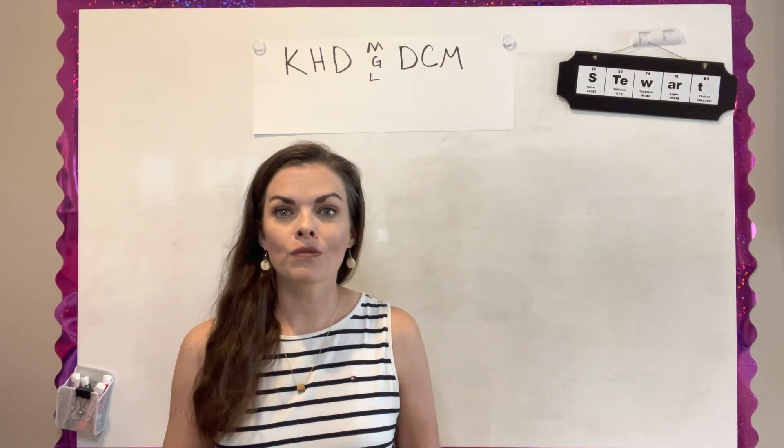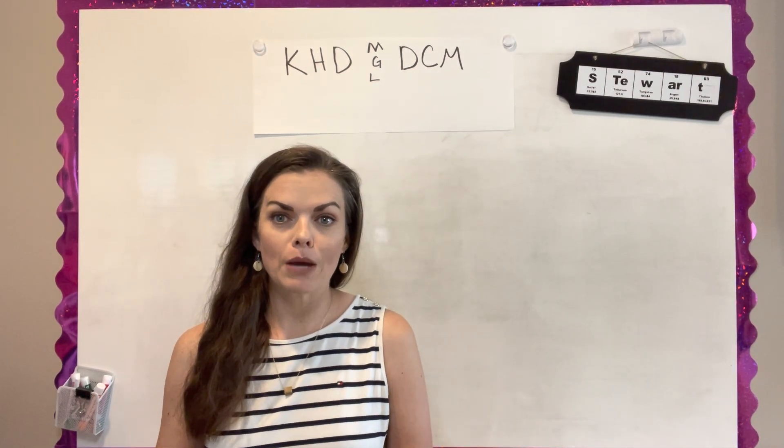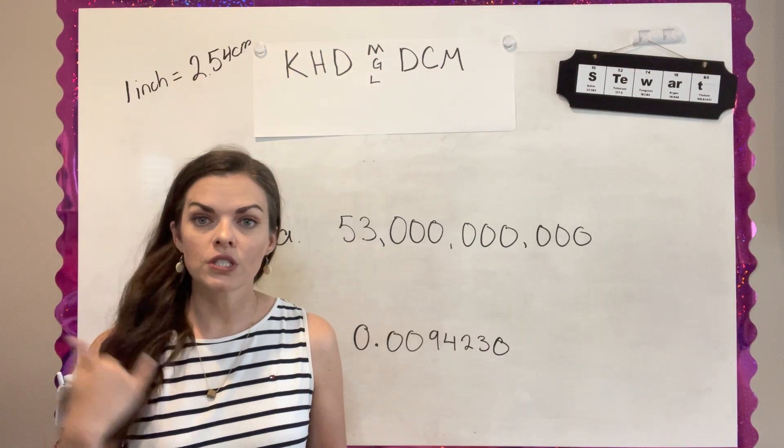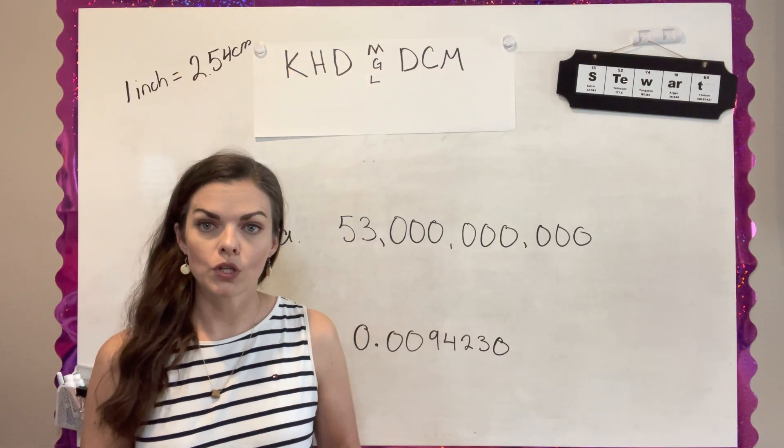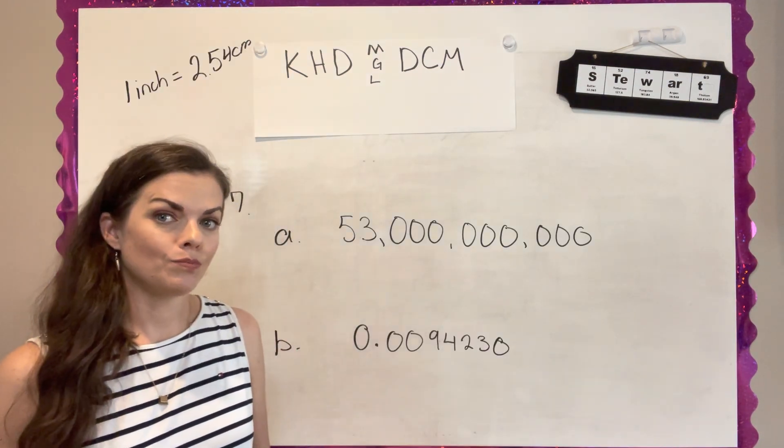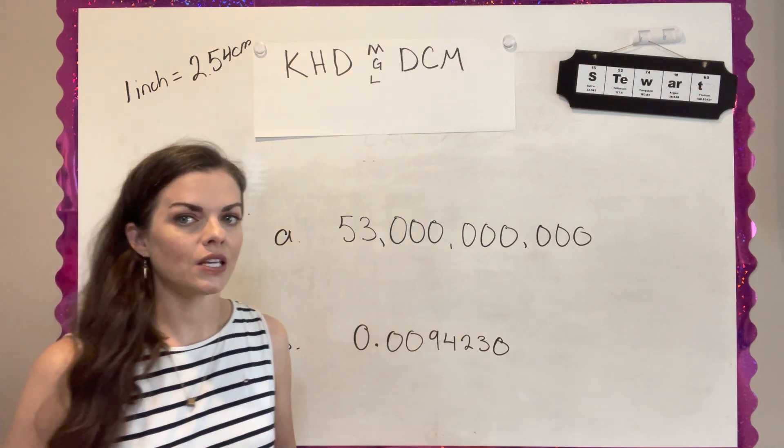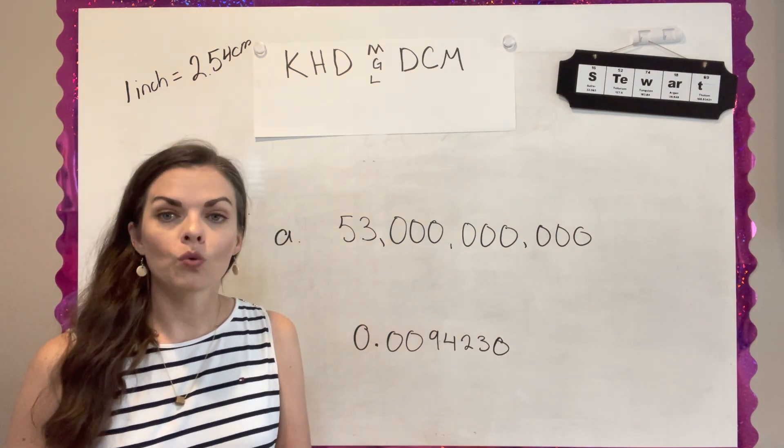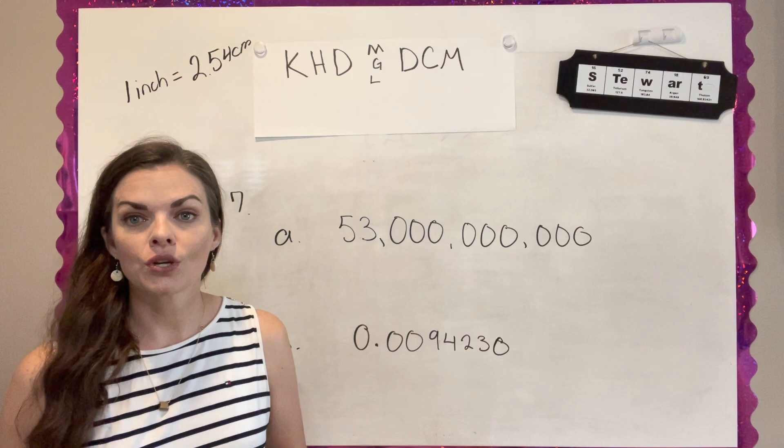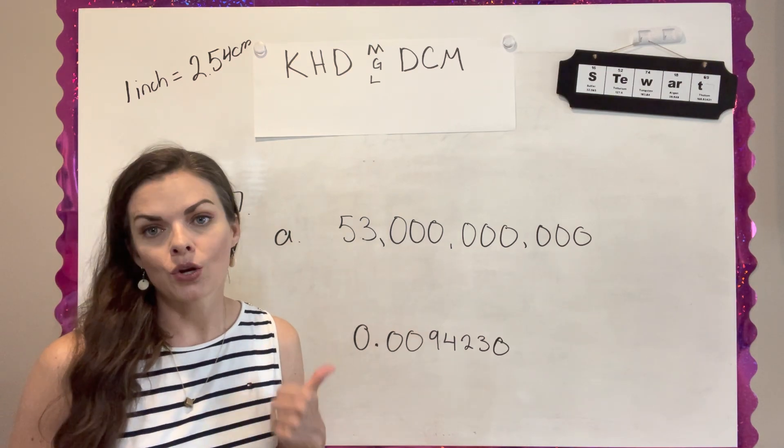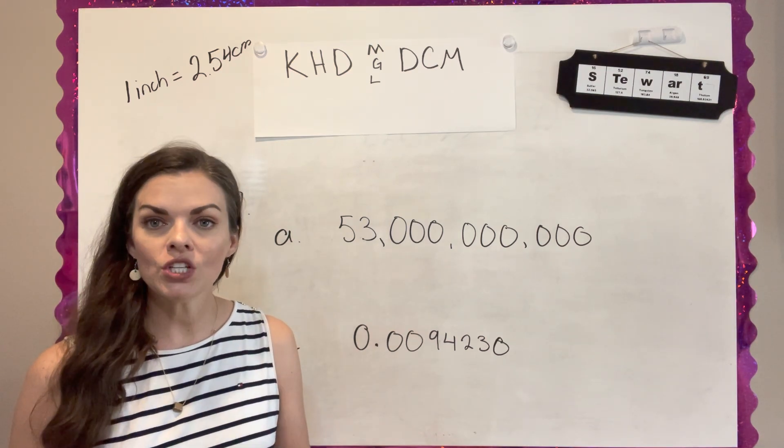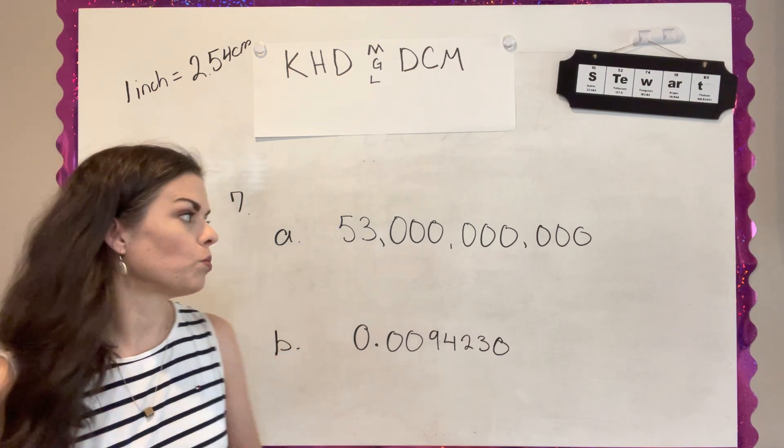Good afternoon. Today we're going to start going over the comprehension check questions from chapter one. Question seven is putting numbers in scientific notation. We're going to get a lot of practice putting numbers in scientific notation and taking them back out. But the one rule that you need to remember for scientific notation is that you can only have one number or one digit to the left of the decimal point.